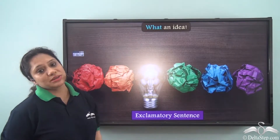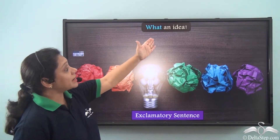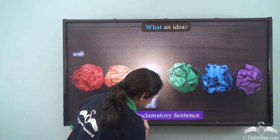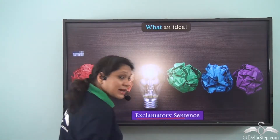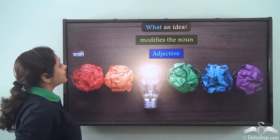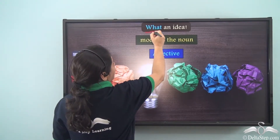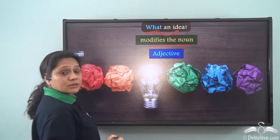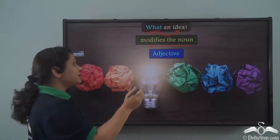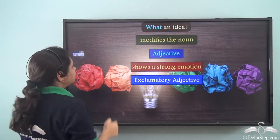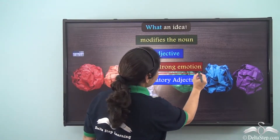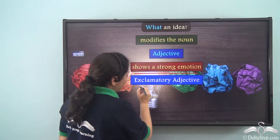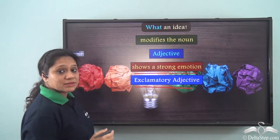Now let us read this sentence: 'What an idea.' This sentence is an exclamatory sentence. In this sentence, what modifies the noun idea, so it is an adjective. This adjective shows a strong emotion, so it is an exclamatory adjective.